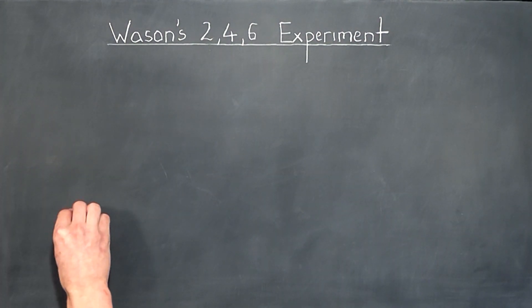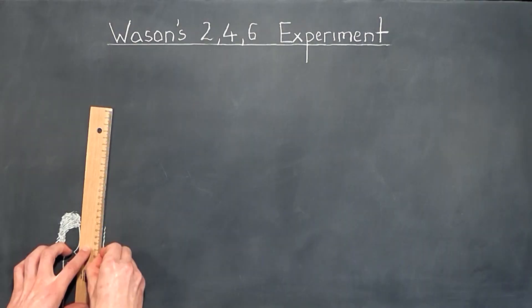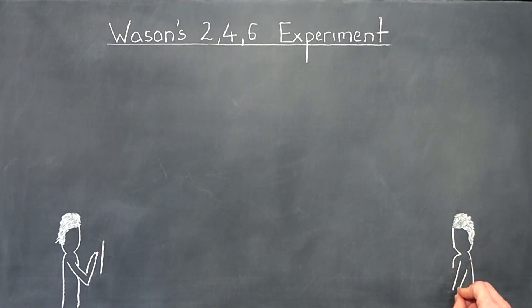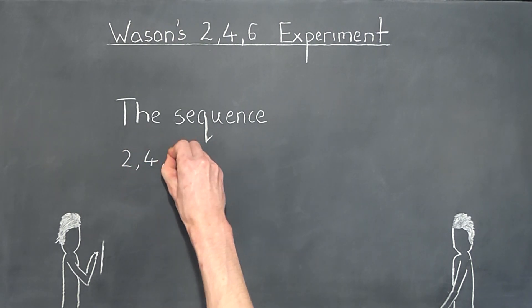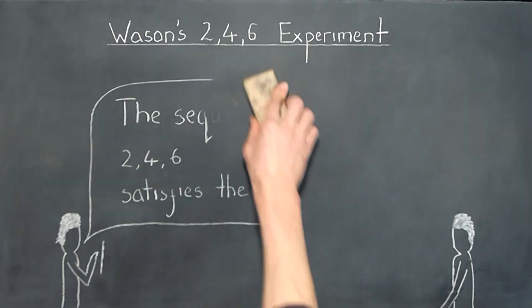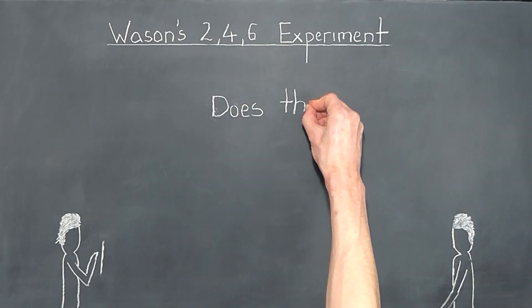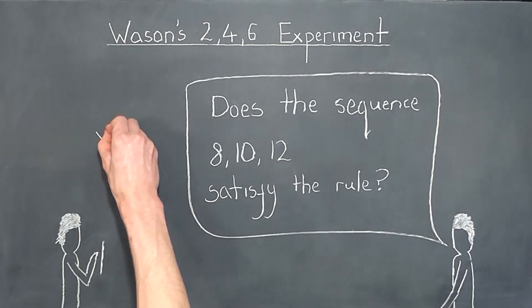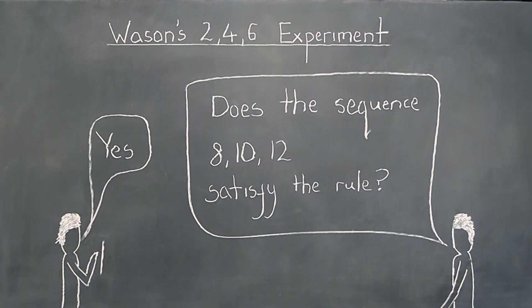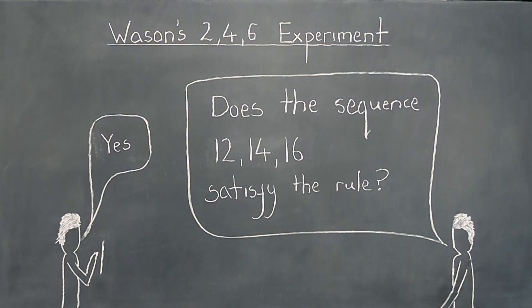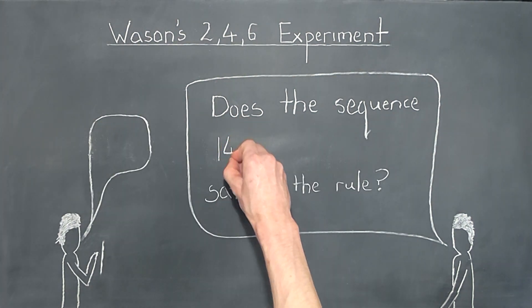In the experiment, Wasson told participants he was thinking of a rule which applies to sequences of three numbers. He then told the participants that the sequence 2, 4, 6 satisfies the rule. The participants were then challenged to find the rule. To do this, they were allowed to propose new sequences of numbers for which they would be told if the sequence satisfies the rule or if it did not satisfy the rule. They were allowed to propose as many new sequences as they liked before having one chance to guess at the rule at the end of the experiment.